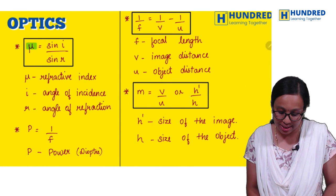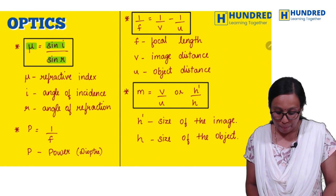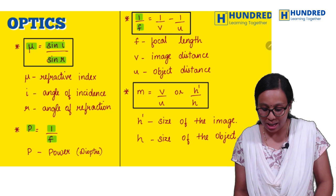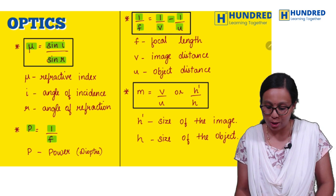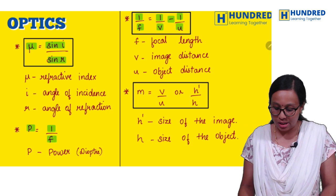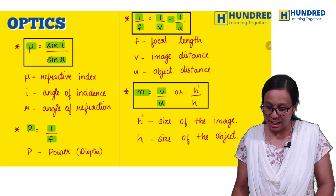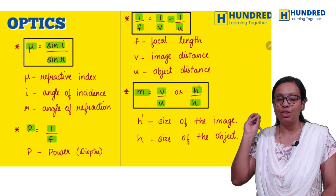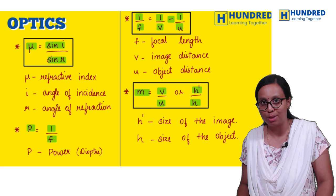Refractive index equals sin i by sin r. Power equals one by focal length. Lens formula: one by f equals one by v minus one by u. Magnification: v by u, or height of the image to height of the object. So this is the formula for optics problem solving.